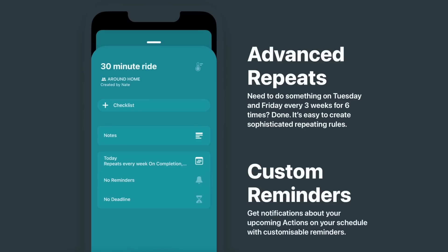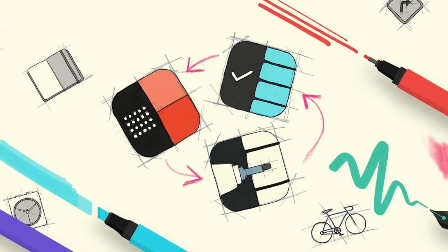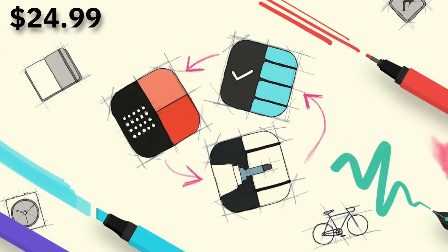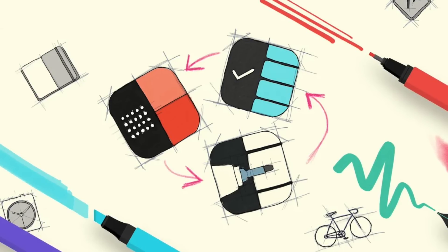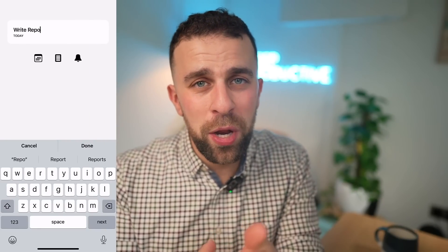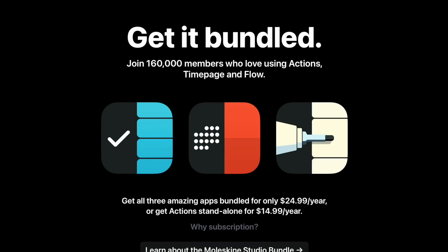As a summary, this is a really beautiful to-do list application to use on iOS. It's priced fairly reasonably — the Moleskine Suite package comes at 24.99 per year, which includes Moleskine Time Page, Moleskine Actions, and Moleskine Flow for sketching and drawing. You're technically getting visual notes, calendar, and tasks all in one experience for $24.99 a year, which is fairly reasonable.